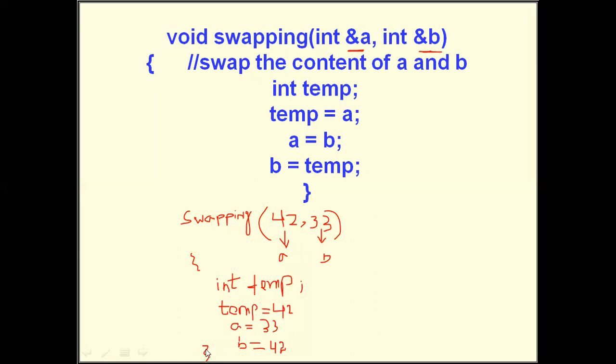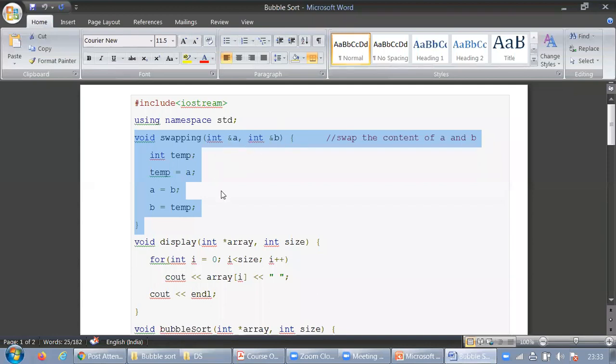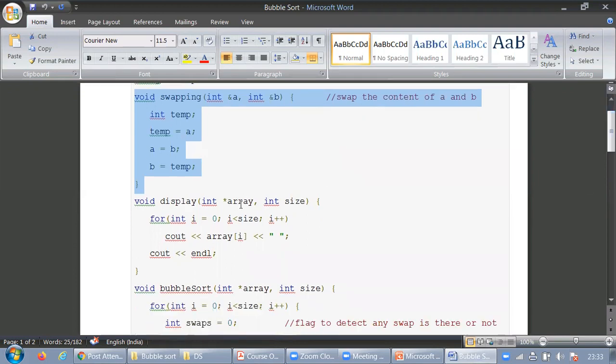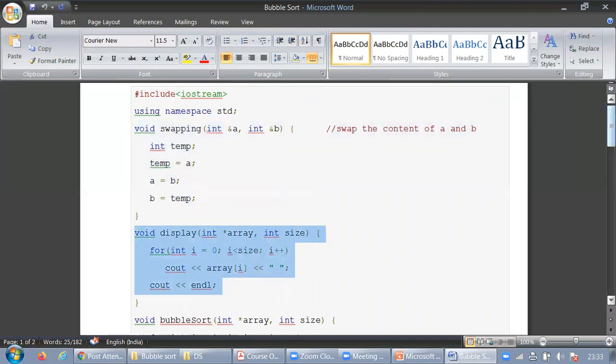So if I go back to the coding, then this is a swapping function. It is taking two values in the parameter and it is swapping them. And I have told you this in the documentation, that swap the content of a and b. Now this display function is displaying what? Array, size integer type, size and array. And the array is displaying. If I have declared size 5, I will display 5 size array. When I pass the array in the display function, I will pass the array and its size. So it will display the array in the for loop.